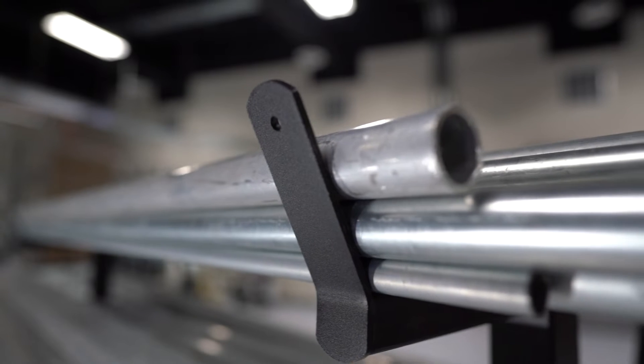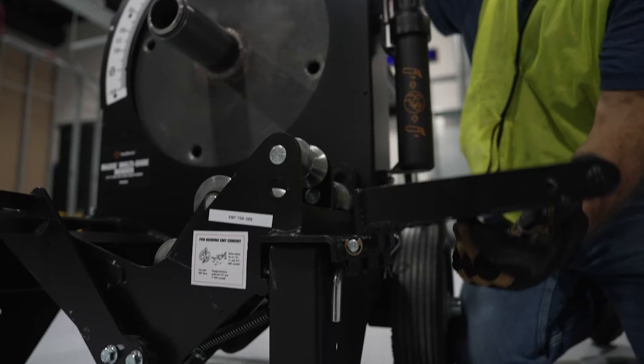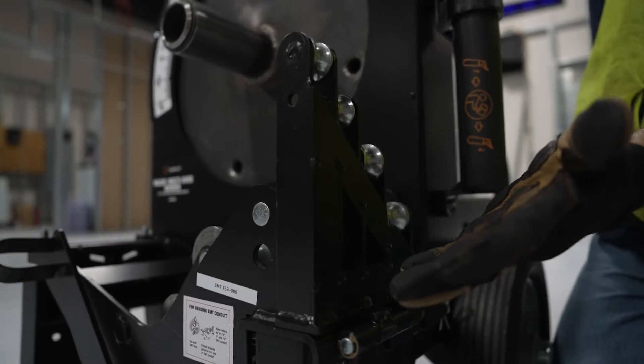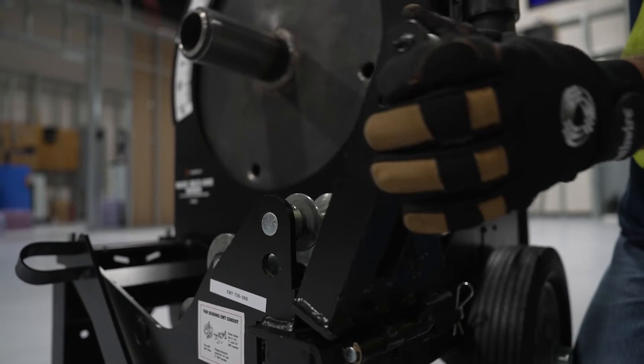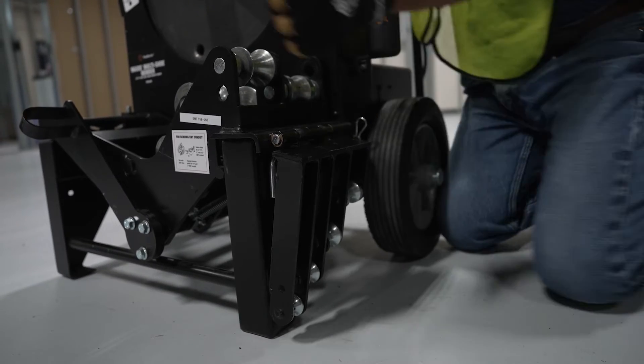Now if you're bending half-inch, three-quarter, one-inch, or inch and a quarter EMT conduit, the small rollers are placed in the up position like this. If you're bending inch and a half or two-inch conduit, the small rollers are not used and they can be left in the folded down position.